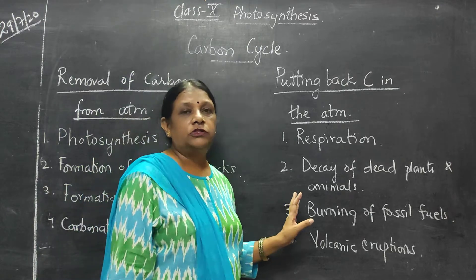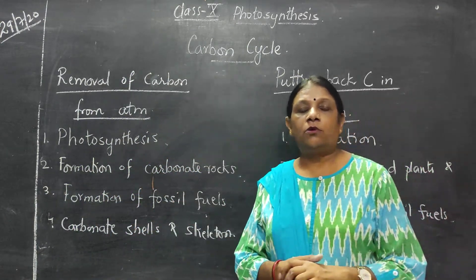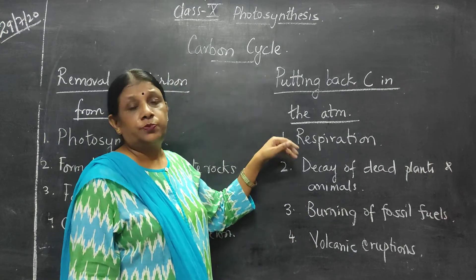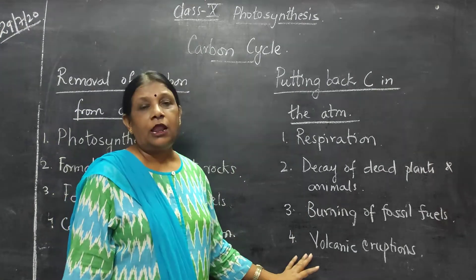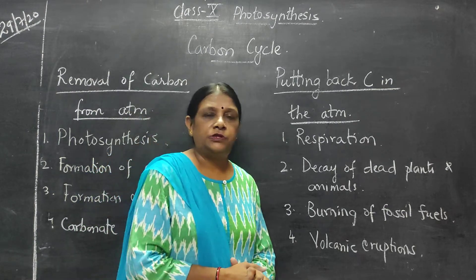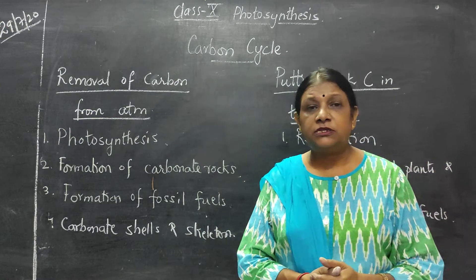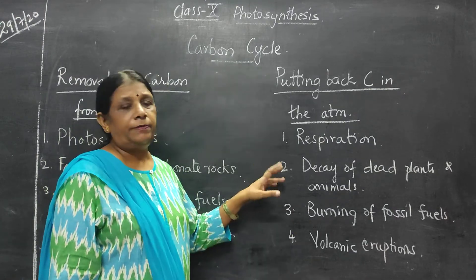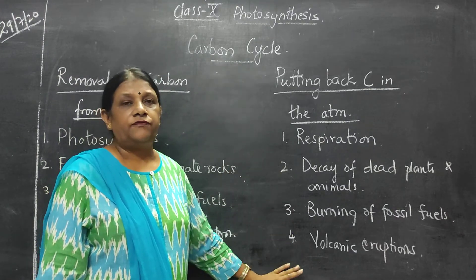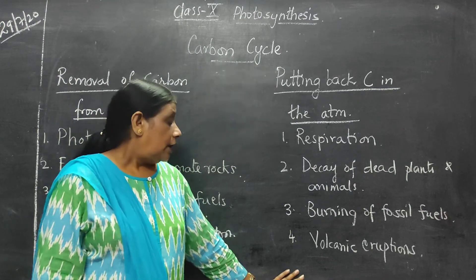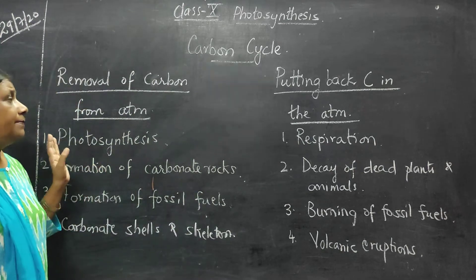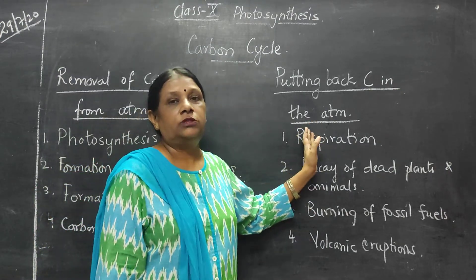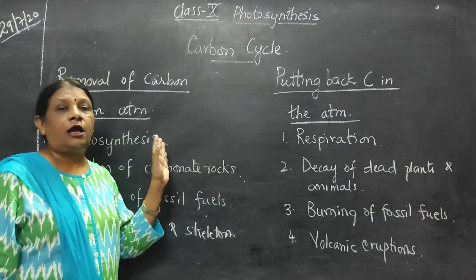Third is the burning of fossil fuels. When you burn coal, petroleum, carbon dioxide is formed, and this is how carbon is put back into the atmosphere. The last one is volcanic eruption. When a volcano erupts, the lava is thrown out along with a large amount of heat, light and carbon into the atmosphere. These are the four ways carbon is returned back to the atmosphere to maintain the carbon cycle.